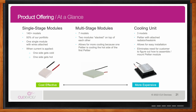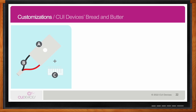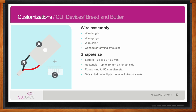CUI Devices offers customizations on their Peltier modules. The most common is a wire assembly — adjusting wire length, gauge, color, or adding connector terminals and housings for easy installation. A second customization is a full ground-up custom product where the shape, size, and performance characteristics are modified to meet a customer's specific needs. The third customization is a thermal assembly — a Peltier with an attached heat sink or fan — shipped as a complete unit, since Peltiers always need to be used with these other products.